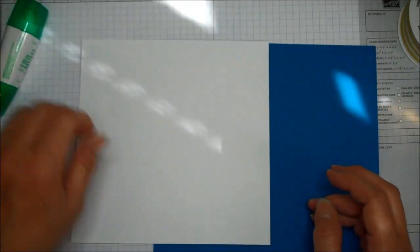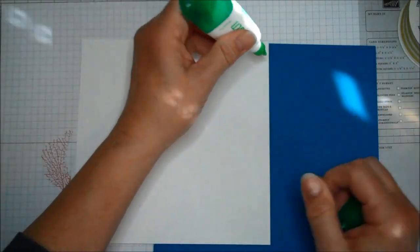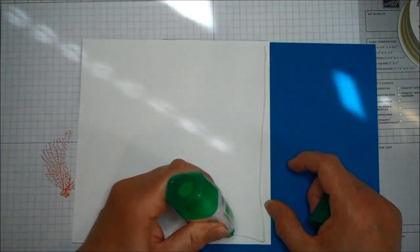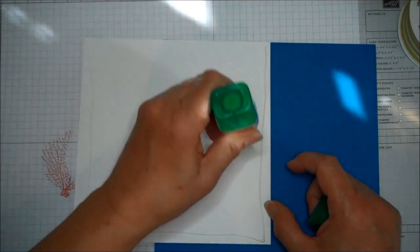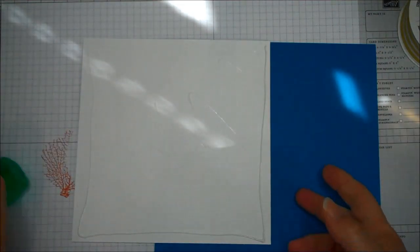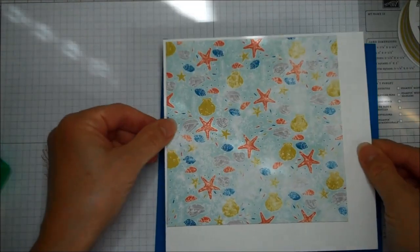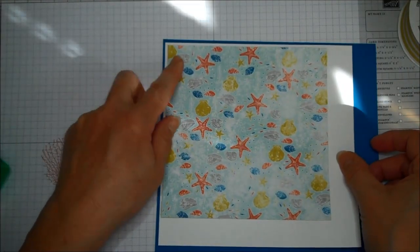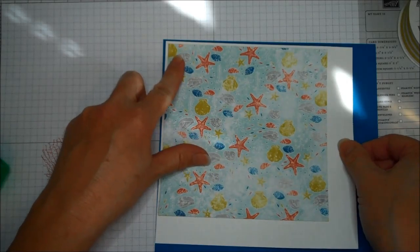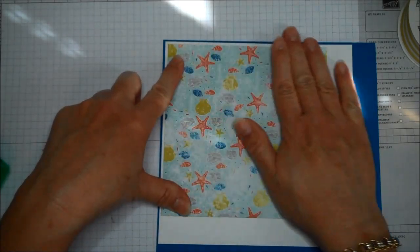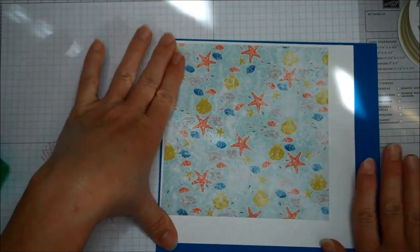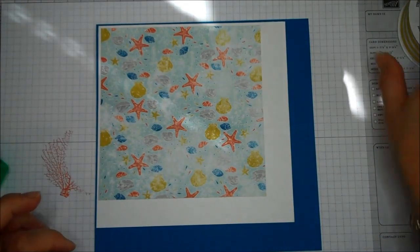Now I'm going to put this down on my Pacific Point. I'm just using a little bit of glue. Use whatever adhesive you like. I like the glue, it sticks really well for me, so I always tend to use the glue. When I first started crafting, I used to use the snail, but I found that over time, especially when it was humid here, the stuff actually wouldn't stick very well. Okay, so that's going to be the base of my page.